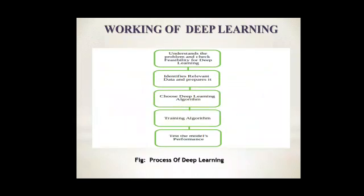Working of deep learning. Working of deep learning depends on five important steps. First step: understand the problem and check the feasibility of that problem. In second step, identify relevant data, extract and prepare for it. In third step, choose deep learning algorithm. Deep learning algorithms include convolutional neural networks, RNN, long short-term memory, etc. Fourth step: train the algorithm. And fifth step: test the model's performance.